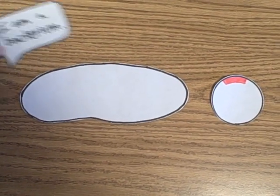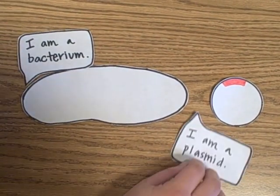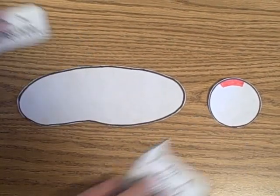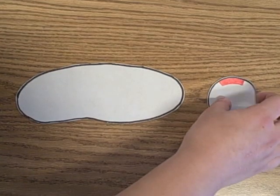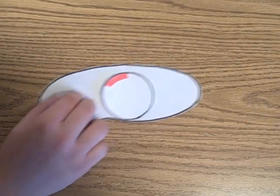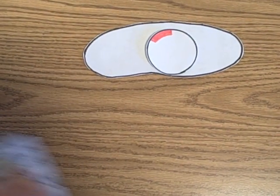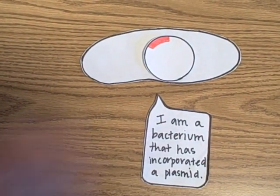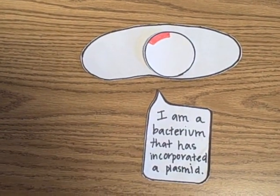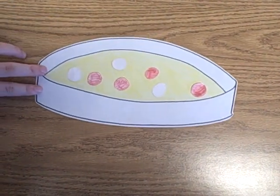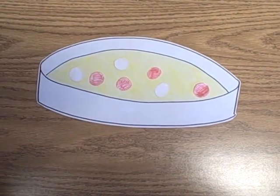We then transform bacteria to incorporate the plasmids containing the desired gene. These bacteria begin to grow into large colonies that can be seen with the naked eye.